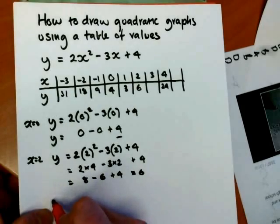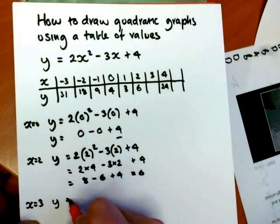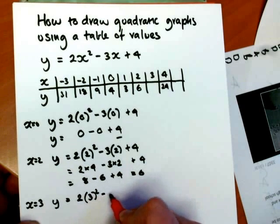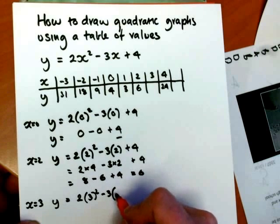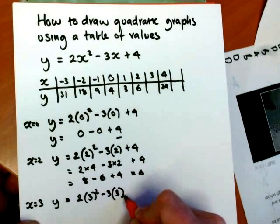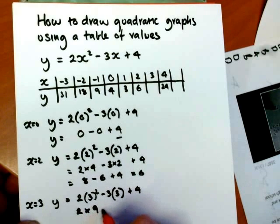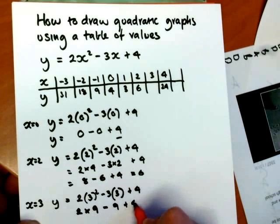Now let's take x equals 3. When x equals 3, y equals 2 lots of 3 squared minus 3 times 3 plus 4. So that's 2 times 3 squared is 9, minus 3 times 3 is 9, plus 4.